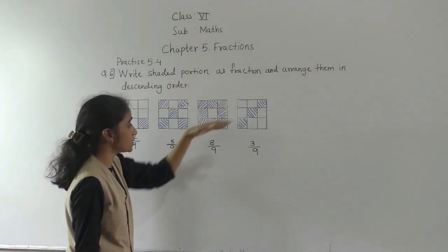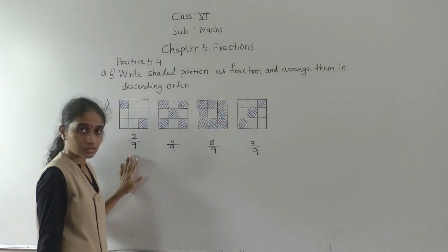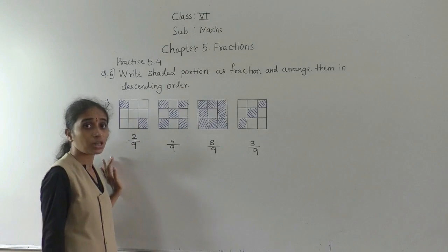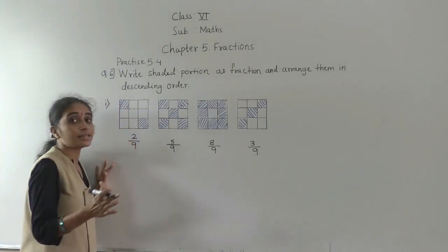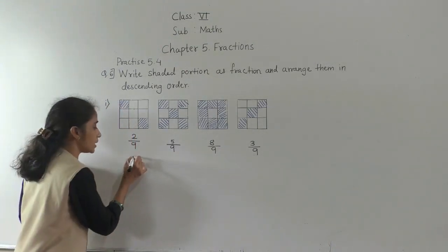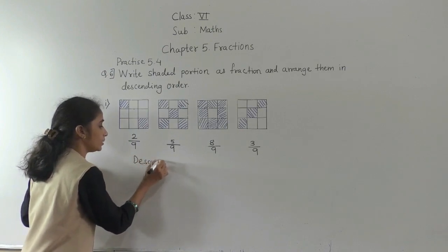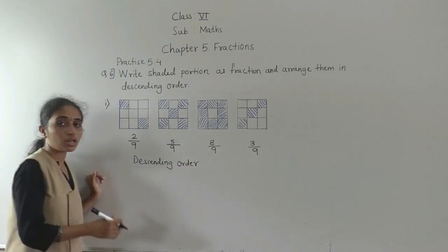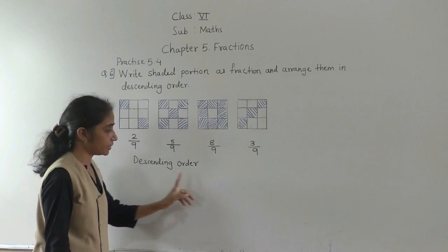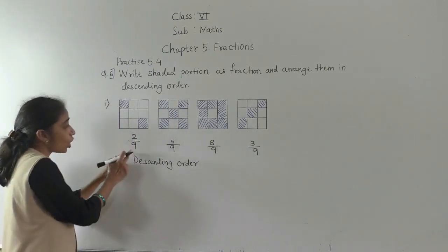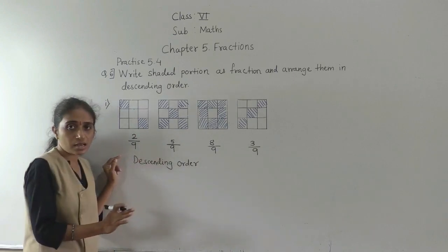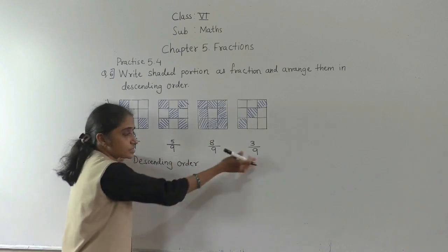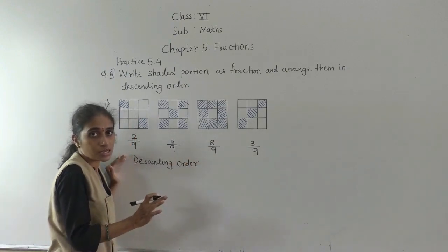So now what is given — the shaded portion as a fraction. It is written in the form of a fraction and we arrange them in descending order. Descending order means big to small. If you observe, the denominators are same, so no need to make them the same — already all denominators are same.